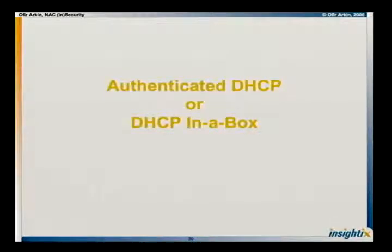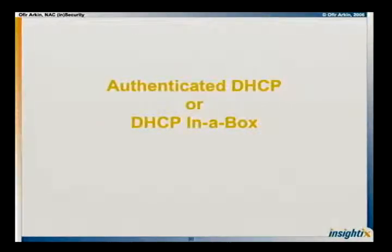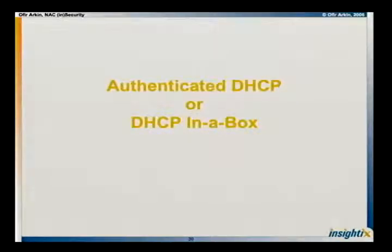Microsoft Network Access Protection does have DHCP, but they state in their documentation — and this is something new for Microsoft — that this is the worst ever way to do network access protection. I have a quote from them later saying it's not security; they just want to make sure the element connecting to the network has the right patches. Most solutions today do DHCP-based, 802.1x, and other things, but whoever does DHCP-based — it's really not a good thing. We'll touch 802.1x later, and you'll see that if you don't do it correctly, you can have some fun there too.